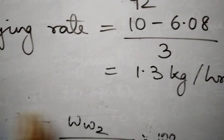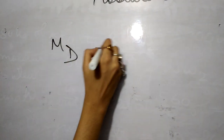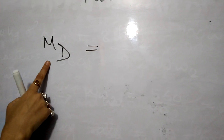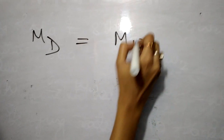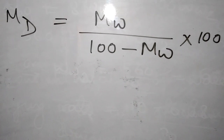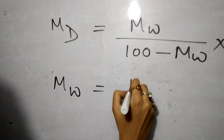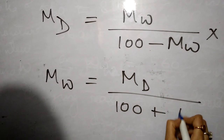So now you understand how to solve: if moisture content is given in kg and the final value is given as a percentage, you can find the drying rate. Now the second part of moisture content: if moisture content is given on wet basis and you need to convert to dry basis, the formula is: Md = Mw / (100 − Mw) × 100. Vice versa: Mw = Md / (100 + Md) × 100.